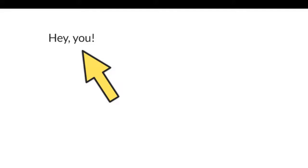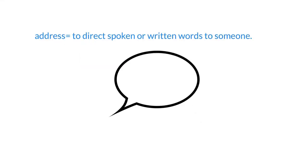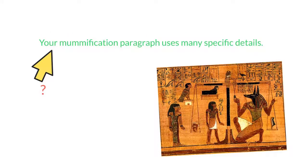Today we are going to talk about something that authors and speakers use all the time: the direct address. An address is a verb — it means when you direct your spoken or written words to someone. Usually we do this by mentioning a name, so that we know exactly who we're directing our words to. For example, in this sentence: 'Your mummification paragraph uses many specific details' — who is 'you'? We need to be more specific.